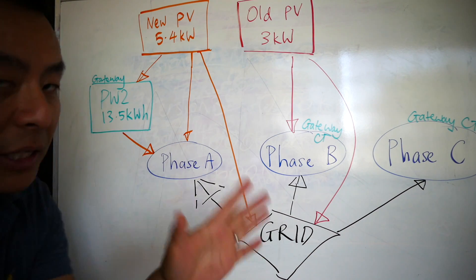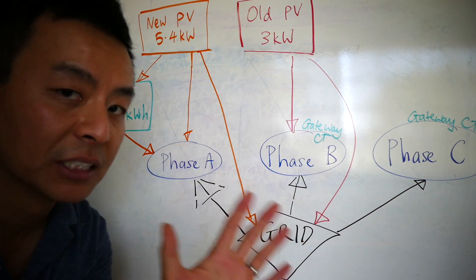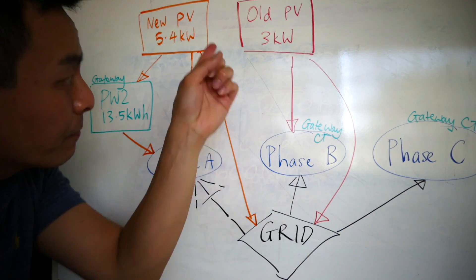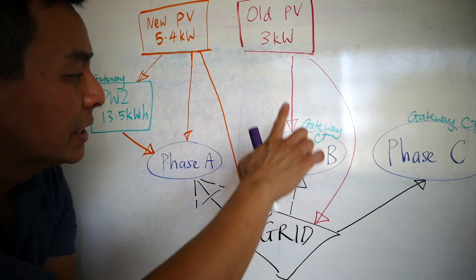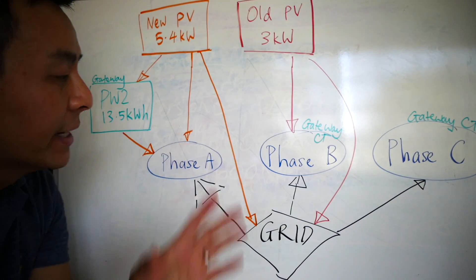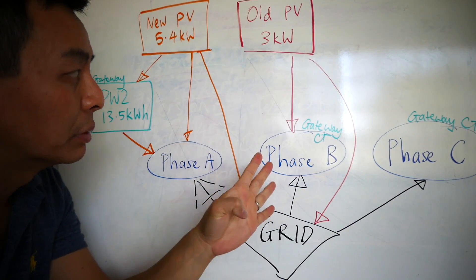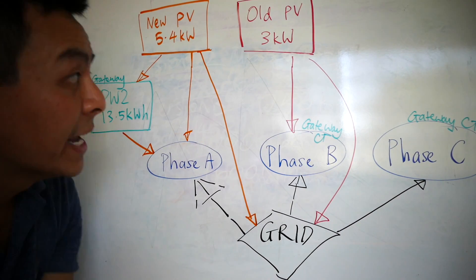Basically, at all times, no matter what time of day, C phase is supplied by the grid. B phase is probably the simplest to explain. The old 3 kilowatt panels during the day when the sun is out, if there's enough generation, B phase is pretty much completely covered by my panels. And if there's any excess, it'll be exported back to the grid with a feed-in tariff.